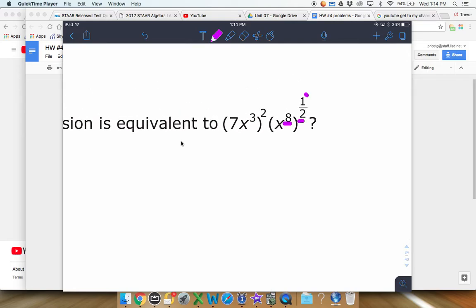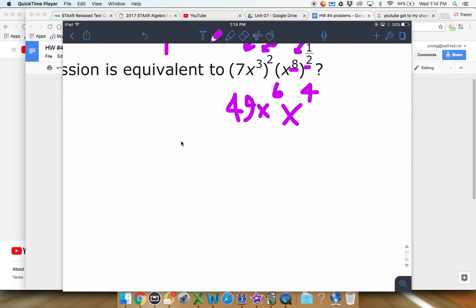We know when we have a power raised to a power, we need to multiply those two. So that x to the eighth raised to one half, that's going to actually turn to x to the fourth. And this squared right here, we need to square the three and then we also need to square seven. Be careful on that - some people are going to want to put 14 there. That's actually seven squared, which is going to get us 49.